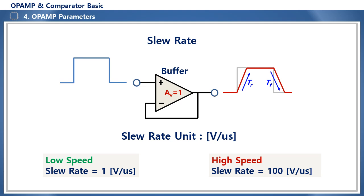Slew rate is a parameter that indicates the operating speed of an op-amp. It is defined as the output voltage change value per 1 µs — a standard for how quickly the output changes for an ideal square wave input. For example, if the slew rate is 1 V/µs, it means the output voltage changes by 1 V over 1 µs. The higher the slew rate value, the faster the speed characteristic. GBW relates to wide band performance, while slew rate relates to high speed performance. For small signal amplification, GBW is important; for large signal control signal processing, slew rate is the main consideration.